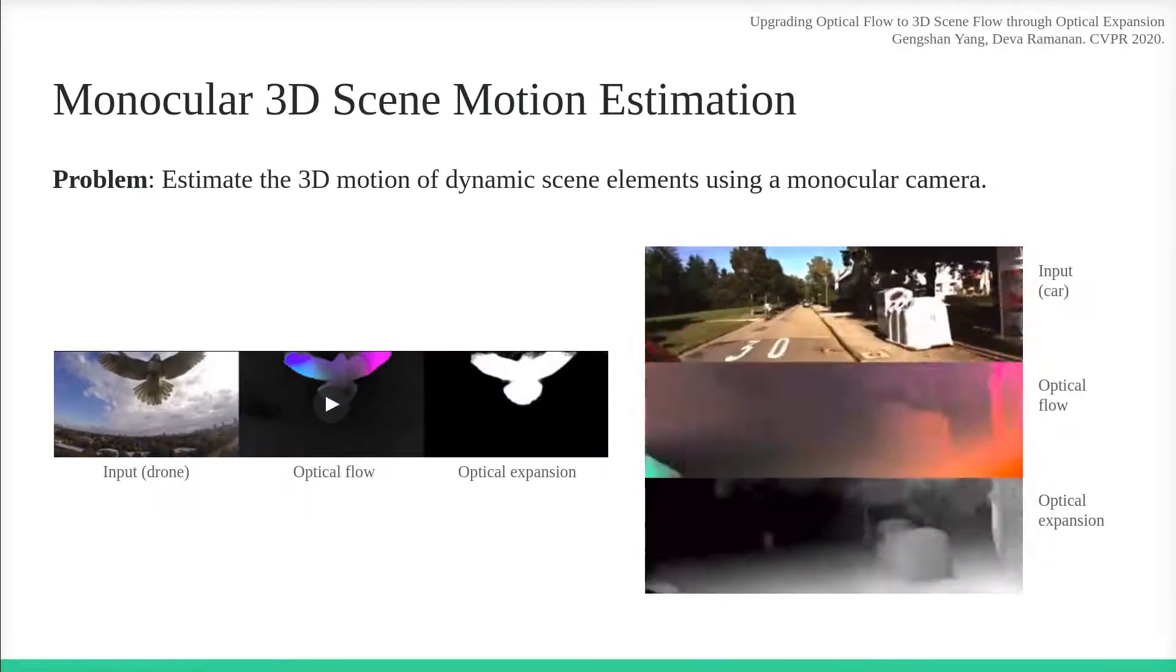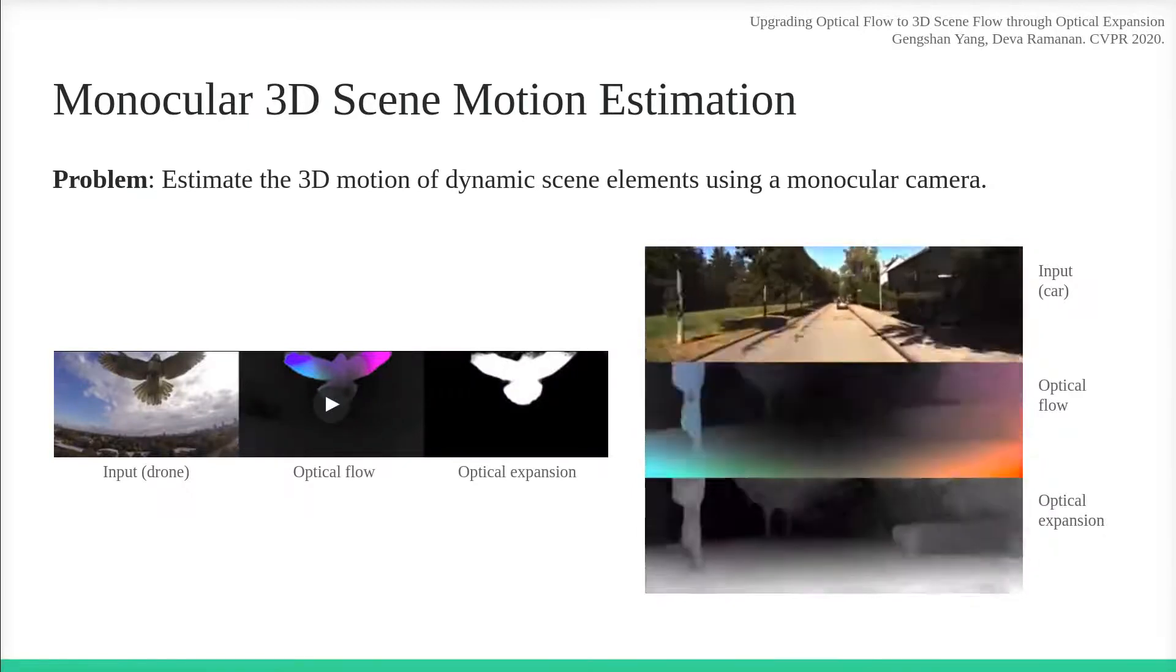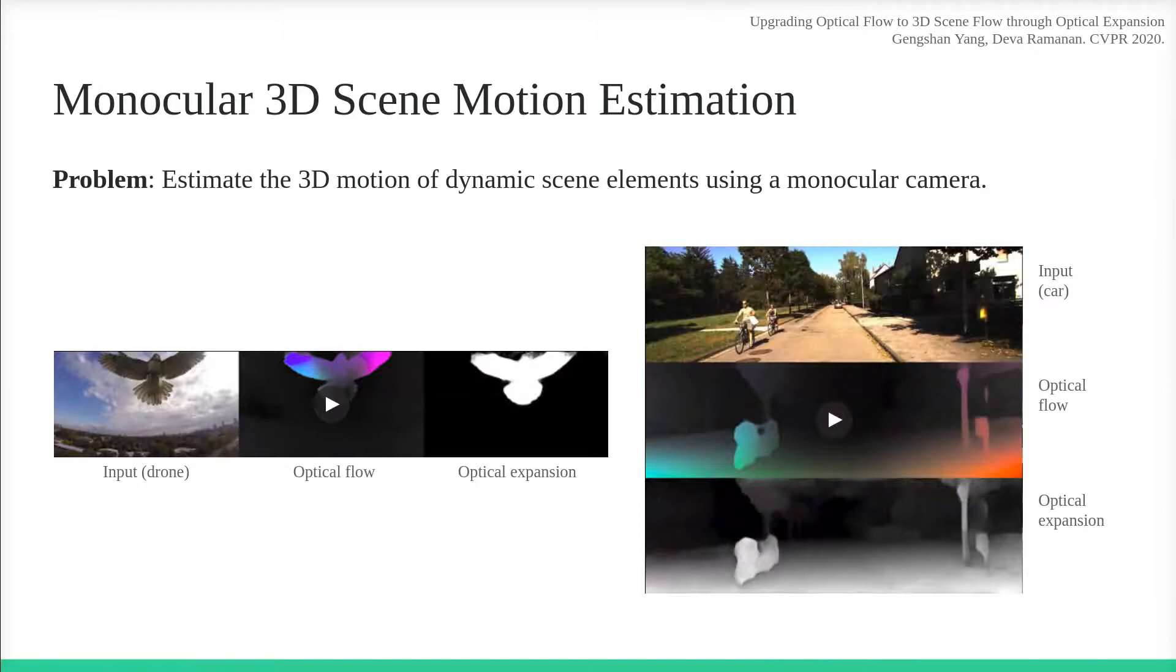In the left video, it is challenging to tell whether the dog is moving towards the joint just from the 2D flow. However, optical expansion reveals the changes in depth of scene elements.